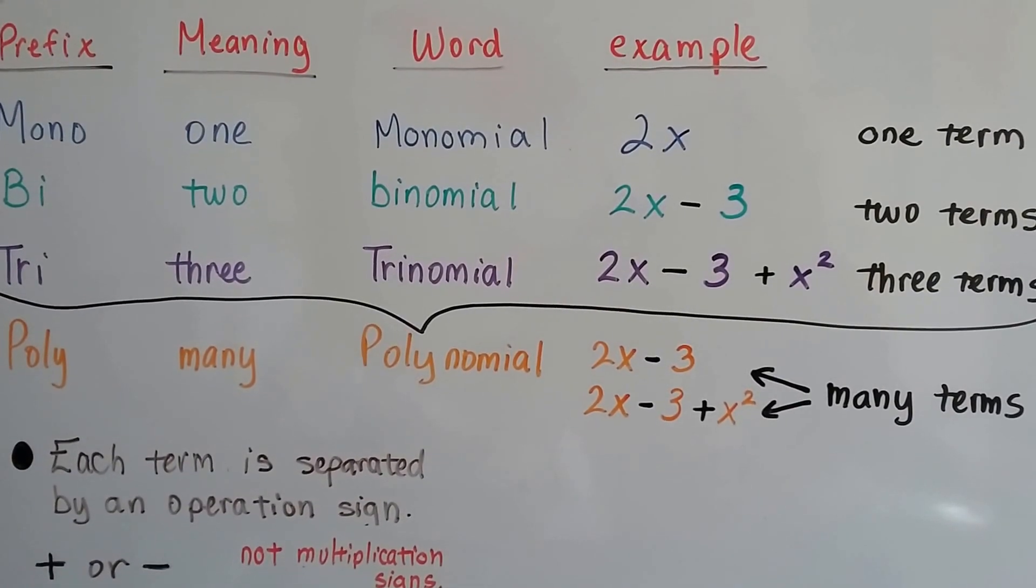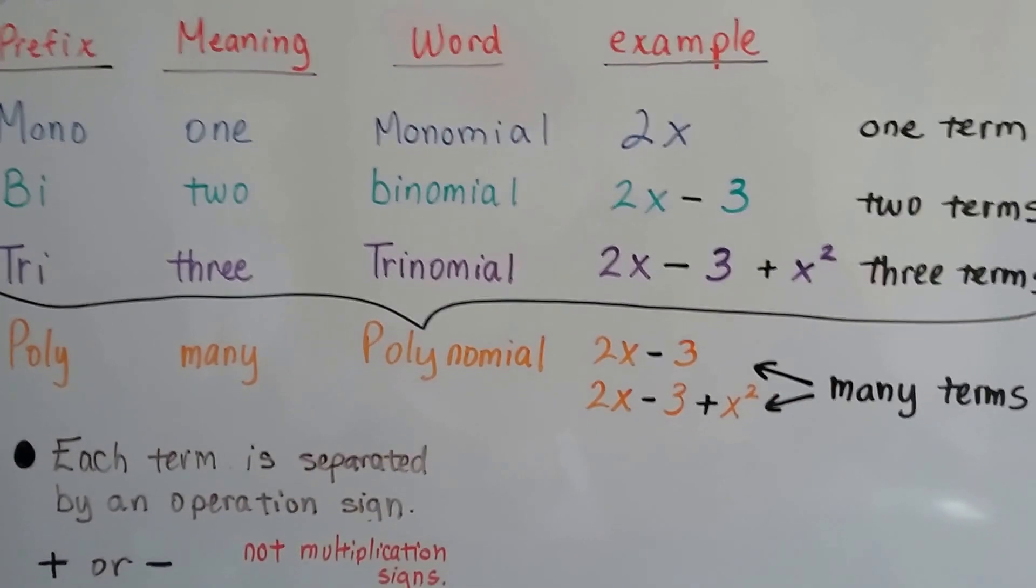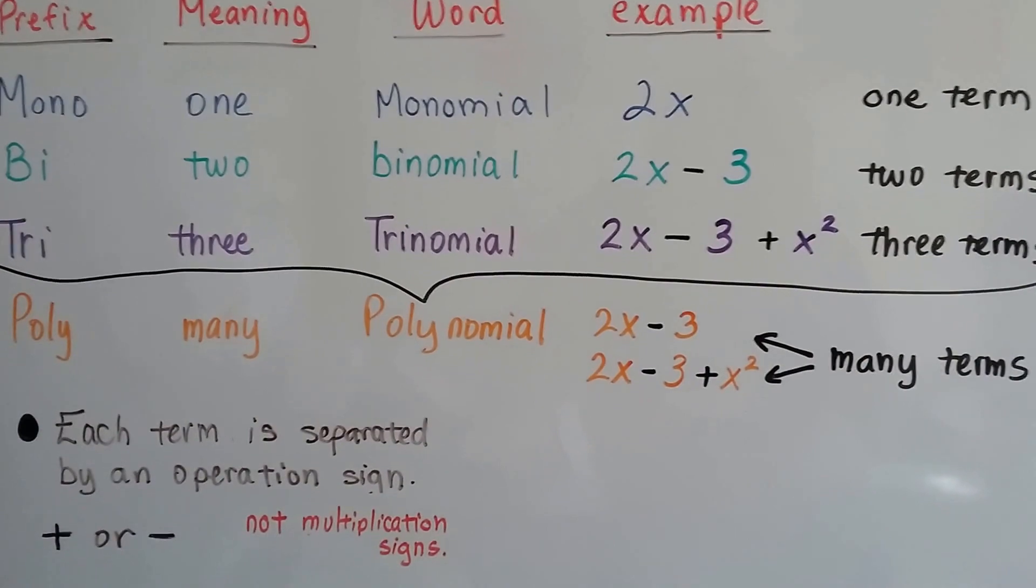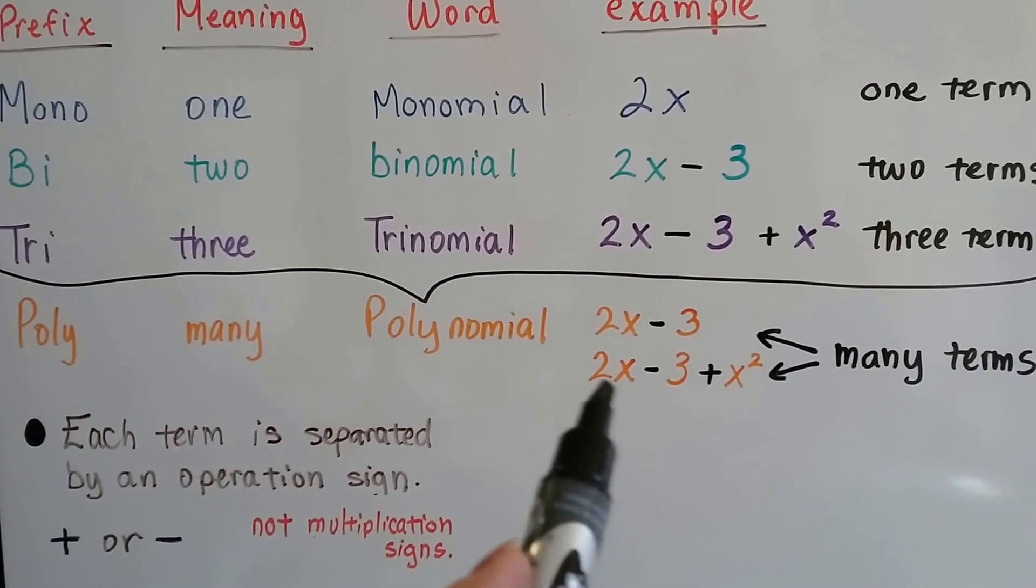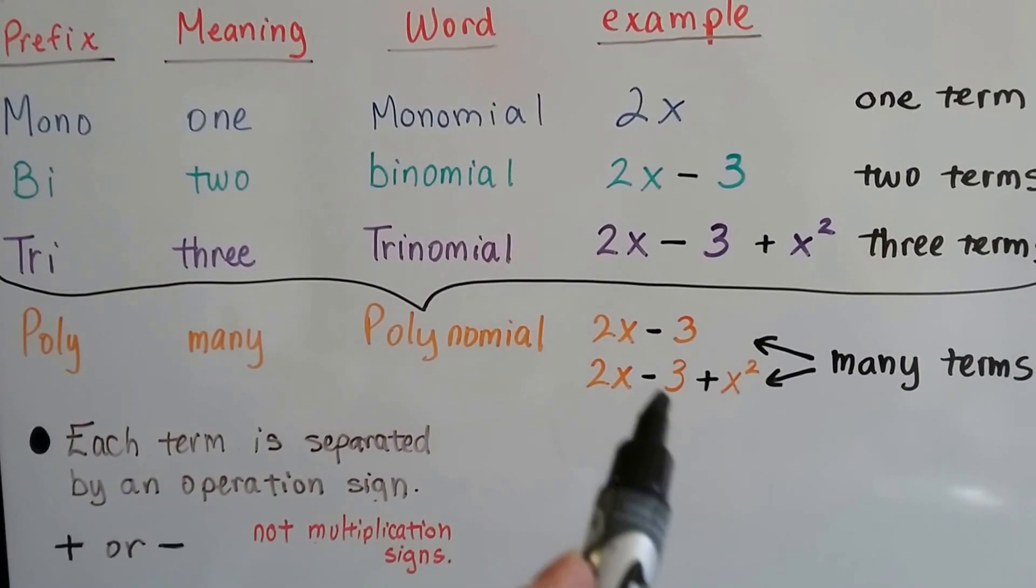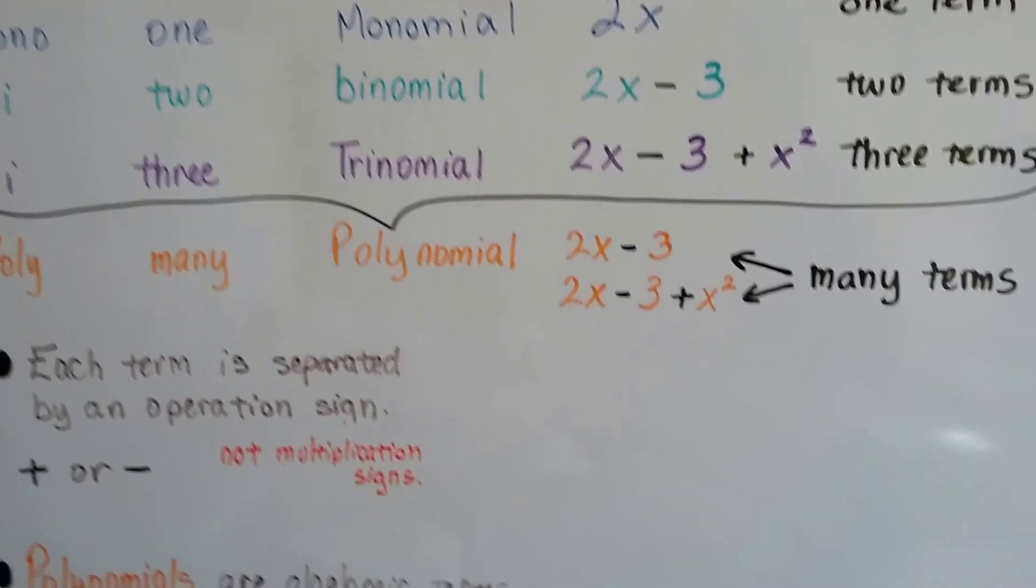So each term is separated by an operation sign, a plus or a minus. And it's not a multiplication sign, so this 2x together is one term. So it's got nothing to do with multiplication. It's just separated by the addition or subtraction sign.